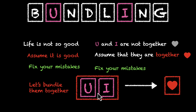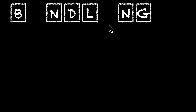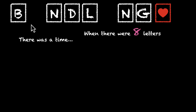It's a very beautiful world where U and I are sitting very close to each other. So this is what we used to have: B, U, N, D, L, I, N, G. But that's no longer the case. U and I don't exist separately — we now form a bundle. This is a new letter that we have. So there was a time when we had eight letters, but now we only have seven.